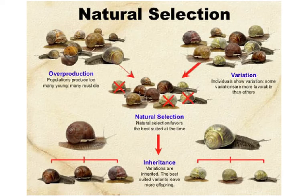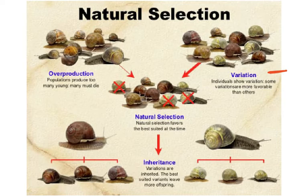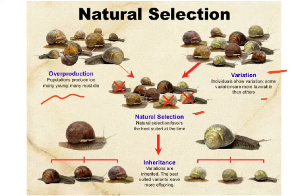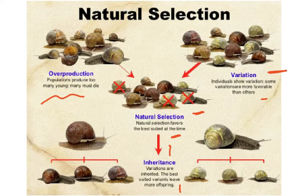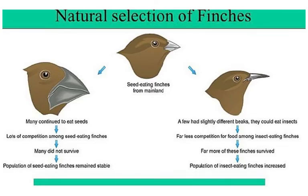Let's look at a few more important points. First, there has to be variation — individuals show variation and some variations are more favorable than others. Then we have overproduction — populations produce too many young and many must die. Then natural selection favors the best suited individuals at that time. Finally, inheritance — variations are inherited and the best suited variants have more offspring.